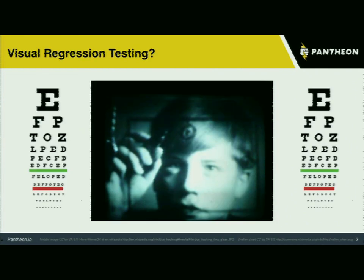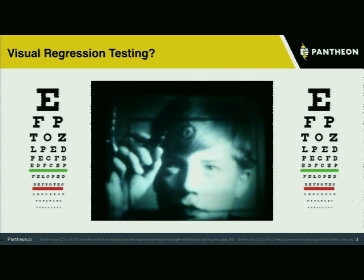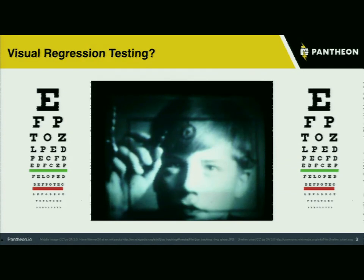How many of you have ever made a CSS change that went a little bit wrong? Was it a global change, and did you notice this change, or did someone else notice it for you? It's actually incredibly easy to push these kinds of changes to production. So this is something where visual regression testing can help — it can help capture these changes and show them to you as part of your workflow.